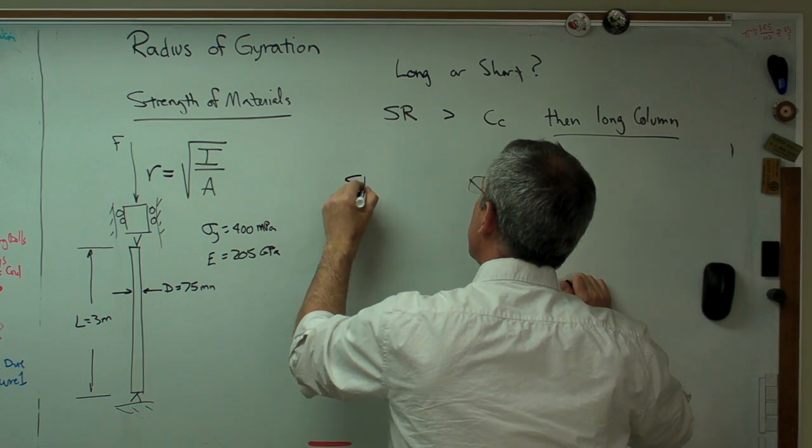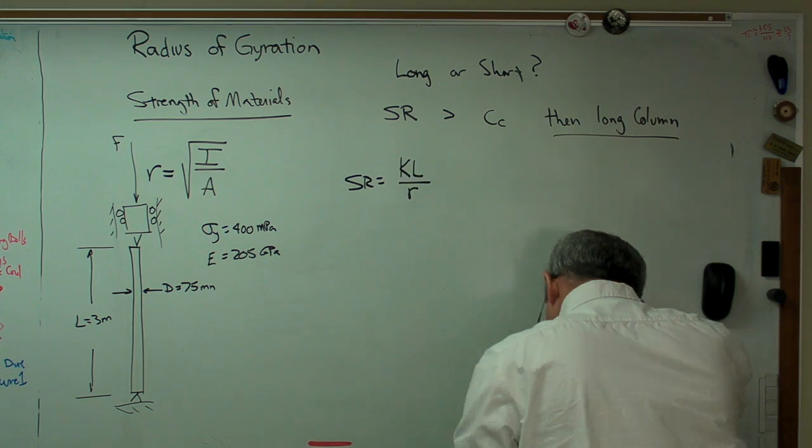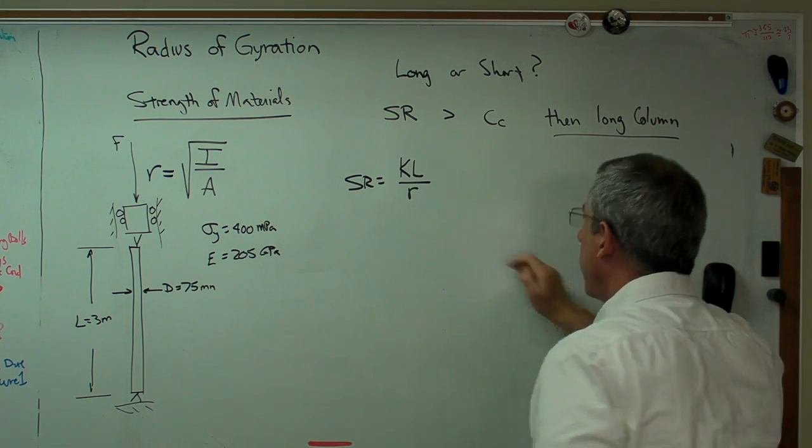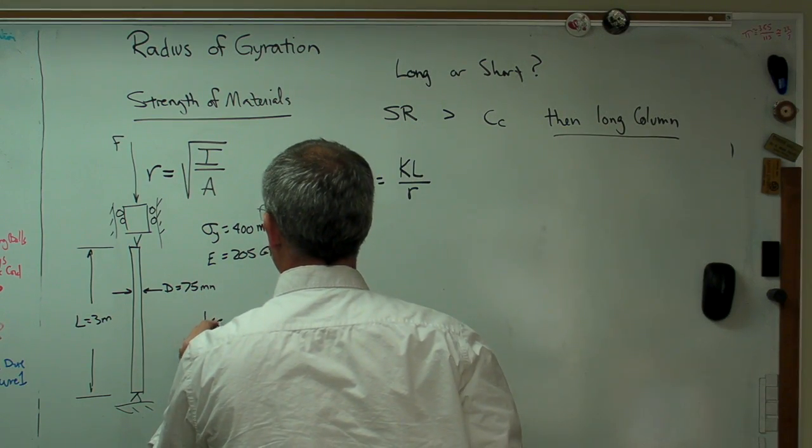The slenderness ratio, and I always have to remember this, is KL over R. Yeah. KL over R. Well, K, in this case, is 1. Okay. K is the end fixity condition. For pinned ends, K is 1.